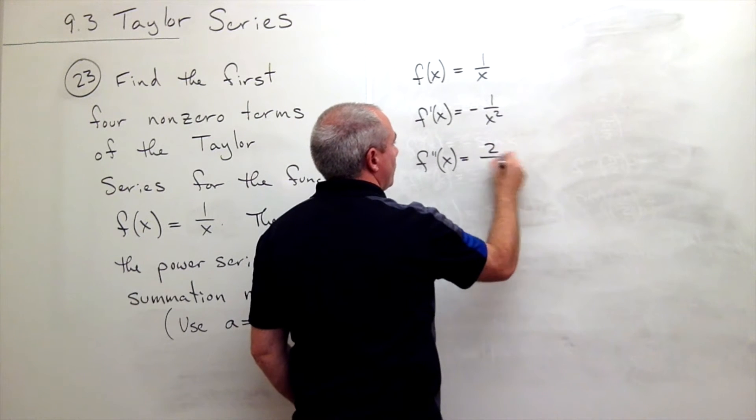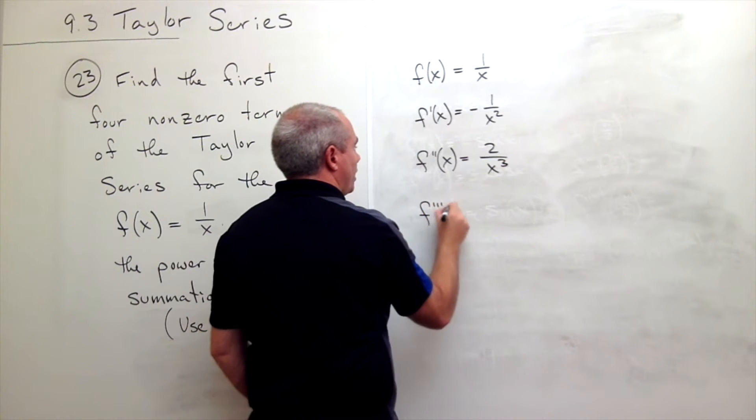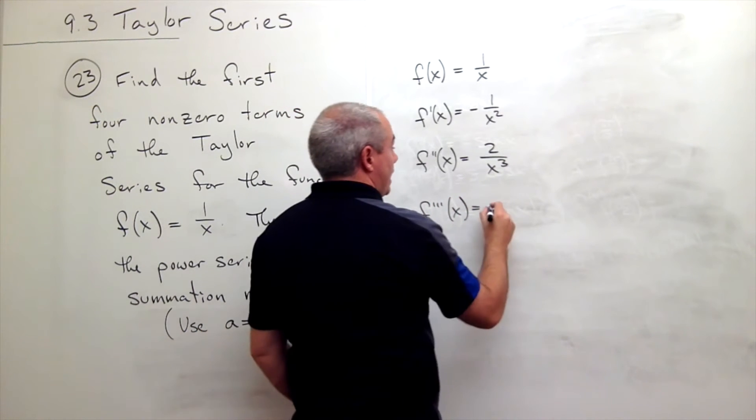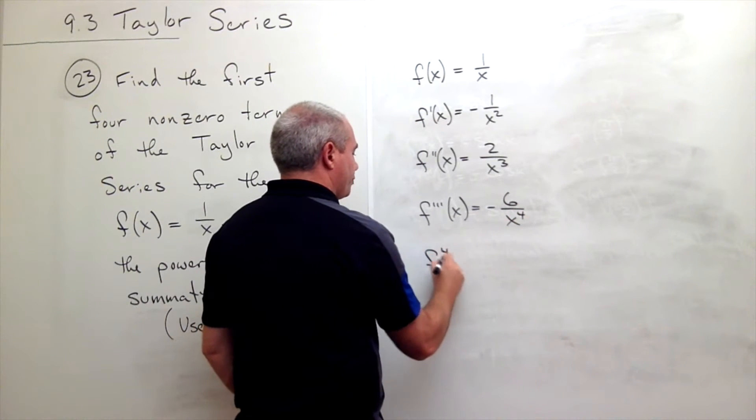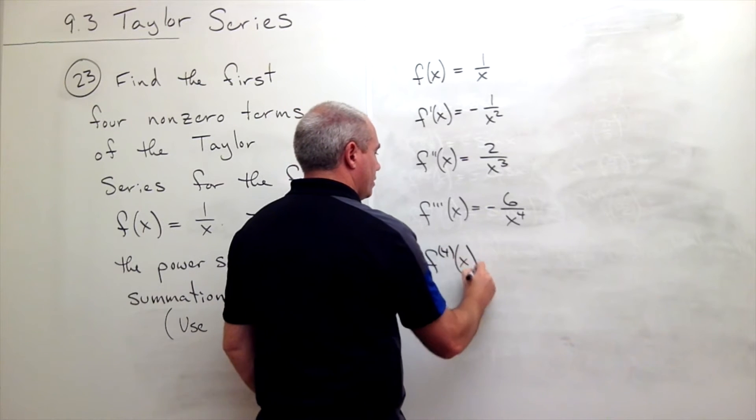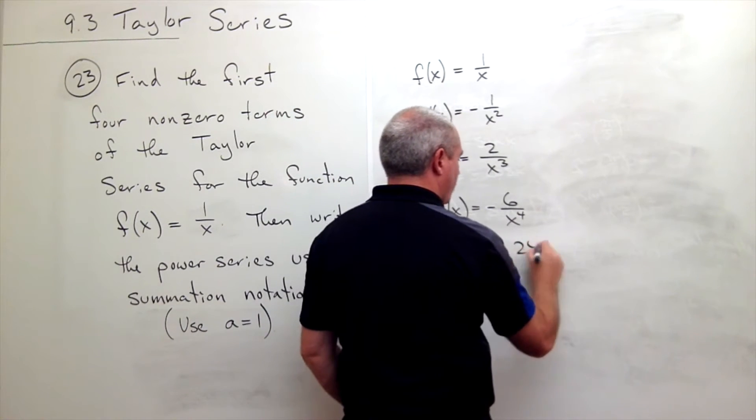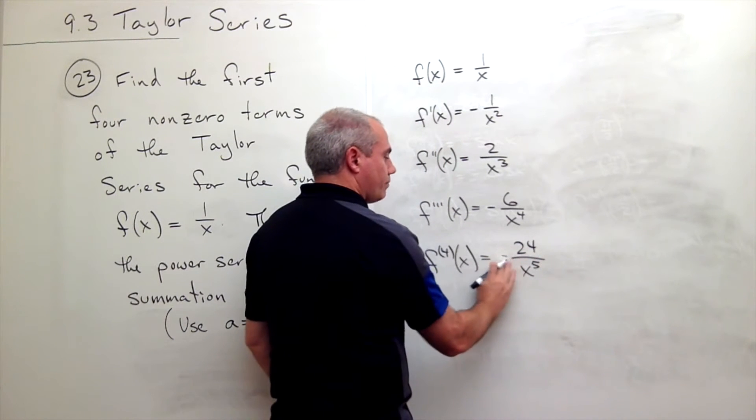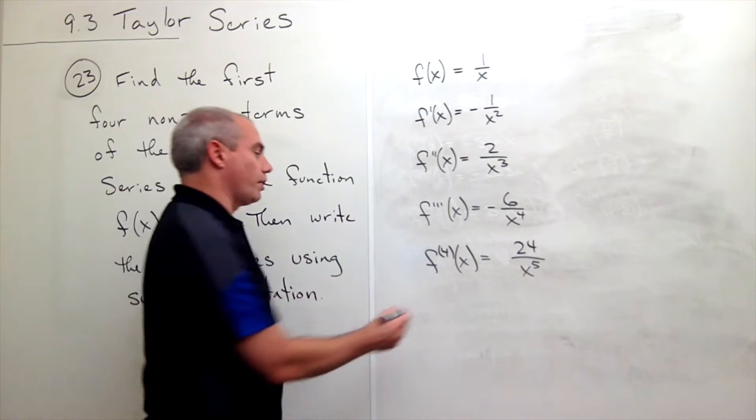f triple prime of x is equal to negative six over x to the fourth, f quadruple prime of x is equal to positive 24 over x to the fifth, and so on.